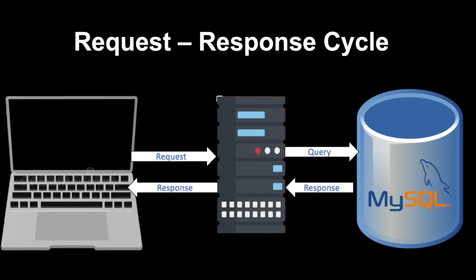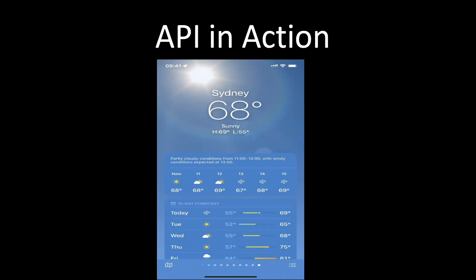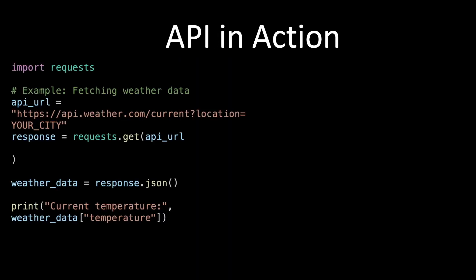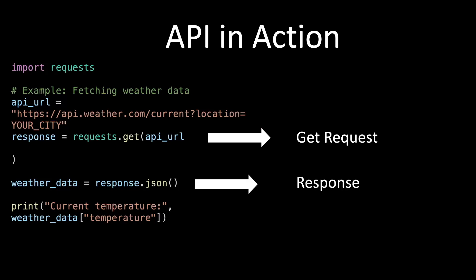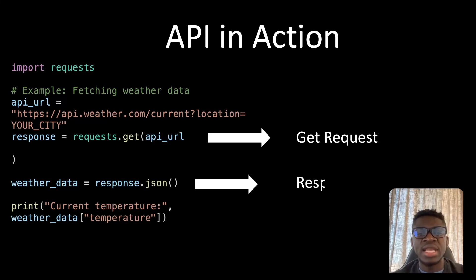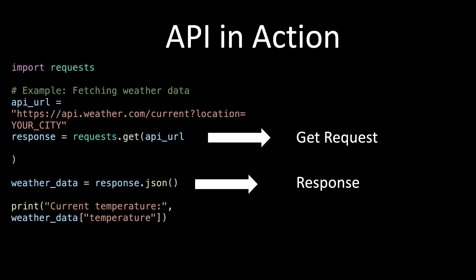Now let's see an API in action. Here's a quick look at how a weather API works. Weather.com provides an API that an application can use to check the current weather of any location at a given time. Say we're building a weather tracking app — we send a request to get the current weather for a specific location, and the API responds with the data. The app sends a request and the API returns the data needed, just like ordering a pizza and getting it delivered to your doorstep.